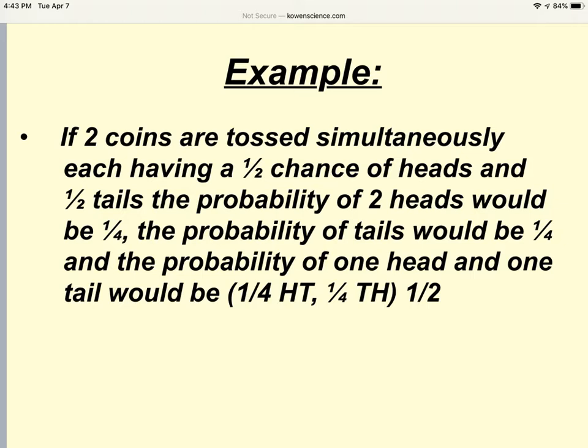Let's look at an example. If two coins are tossed simultaneously, each has a one-half chance of landing on heads and a one-half chance of landing on tails. The probability of two heads would be one-fourth, because the probability of one head is one-half, plus the probability of the other, which would be one-half, resulting in one-fourth. The probability of tails for both would be one-fourth. The probability of one head and one tail would be one-fourth for head tails, one-fourth for tail heads, or one-half.